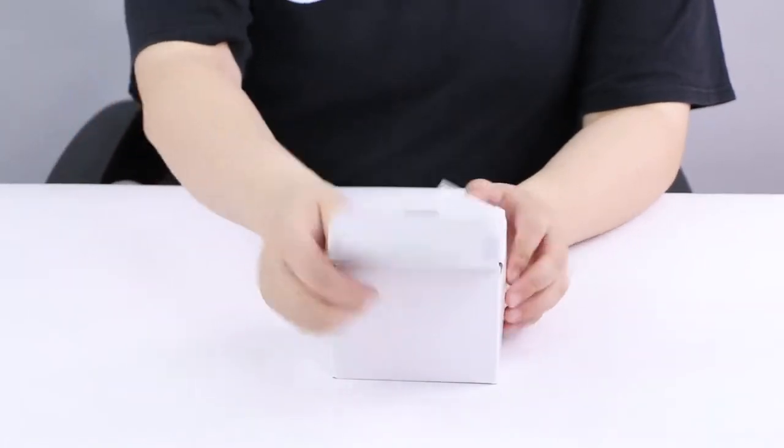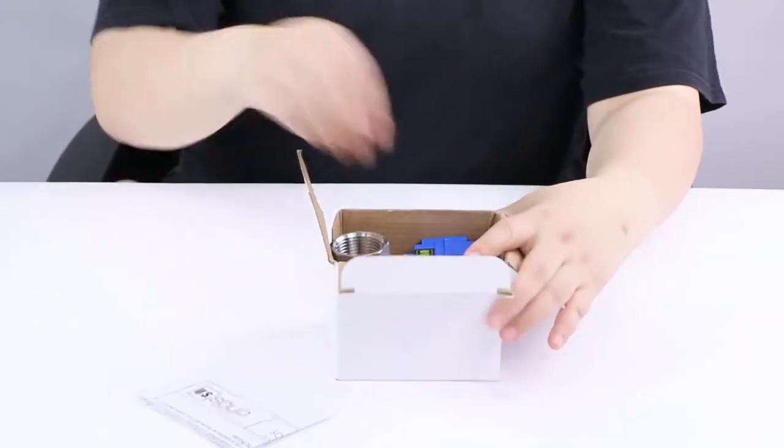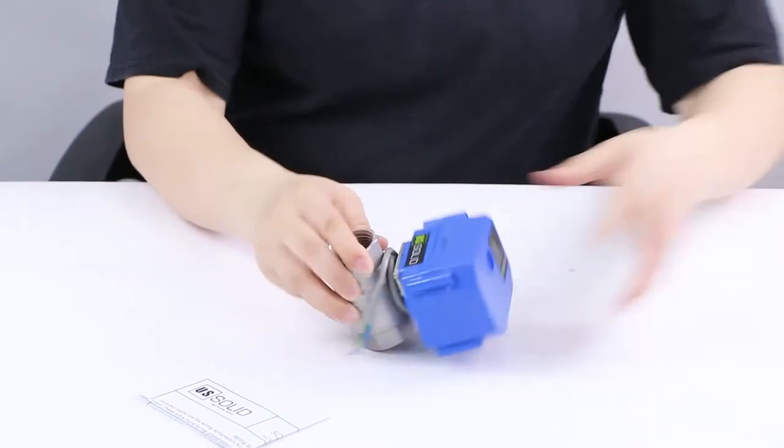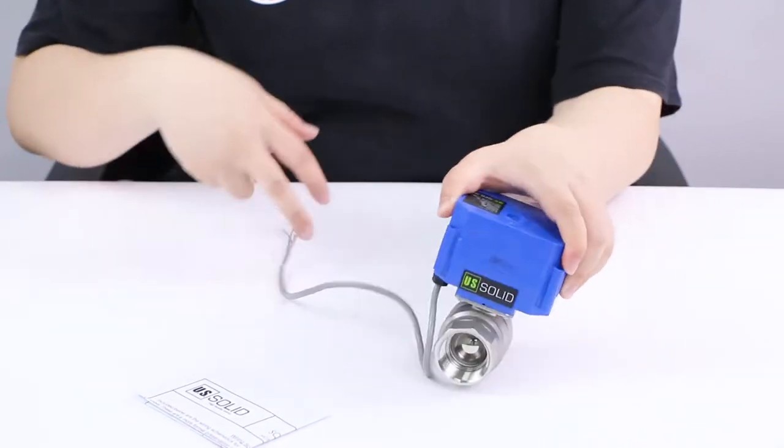Welcome to UI Solid. Today we will show you how to wire a motorized ball valve with 5 wire, which can be used with indicator lights.